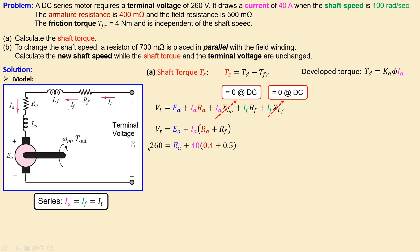Substituting the given values: terminal voltage is 260 volts, current is 40 amps, with the armature resistance and field resistance known. We can now calculate the back EMF for this condition, which gives us 224 volts.